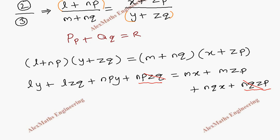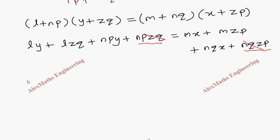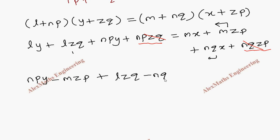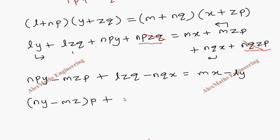Now grouping into the required form. Writing the p terms: n·p·y, and bringing m·z·p to the other side gives minus m·z·p. For the q terms: L·z·q, then minus n·q·x, equal to m·x minus L·y. Taking p common: (n·y − m·z)·p. Plus taking q common: (L·z − n·x)·q equals m·x − L·y. So this is our required partial differential equation after eliminating the arbitrary function.